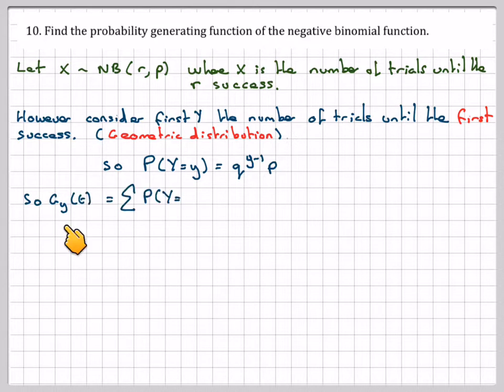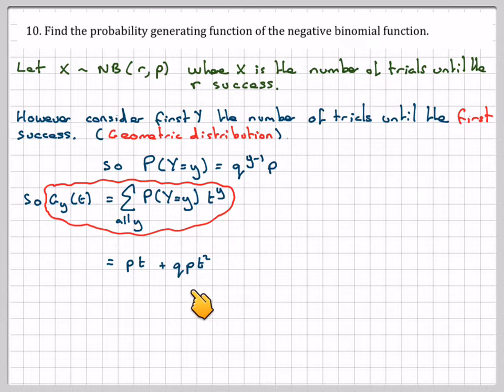So the generating function G_Y(t) is the sum for all y of probability of Y equals y times t to the y. So that will be pt plus qpt squared, because one failure one success, t squared, two failures and one success, t cubed, etc.